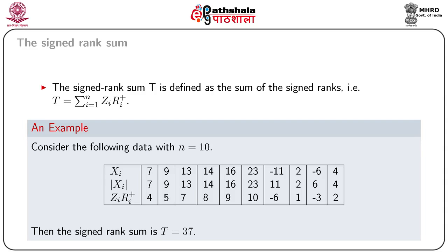Consider the following data with n equal to 10. For the observation with value minus 11, the rank of the absolute value is 6, but the contribution of this observation to T is 0. So we are ranking both positive and negative values, but the contribution to T of the negative value is 0.